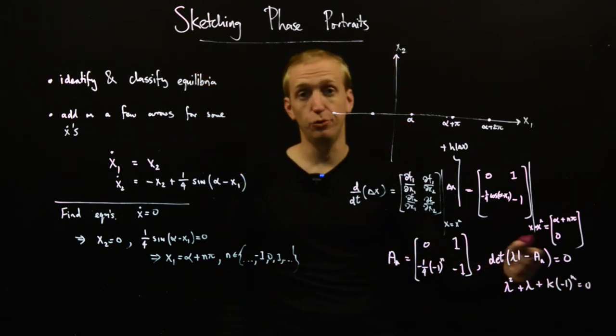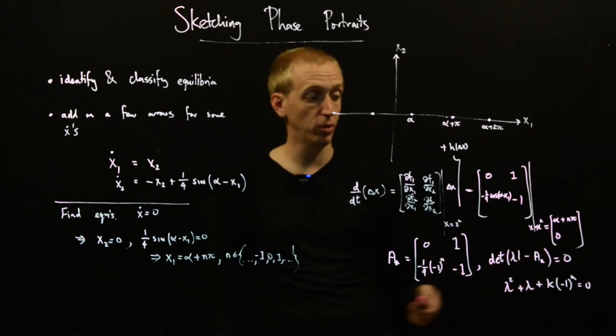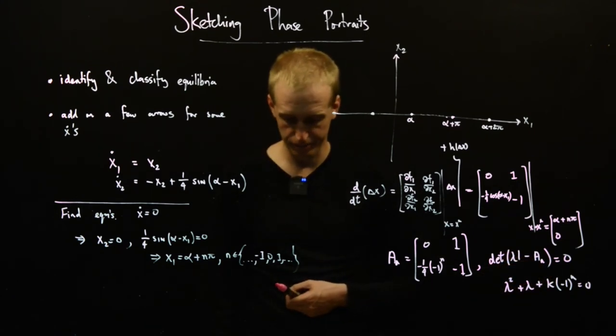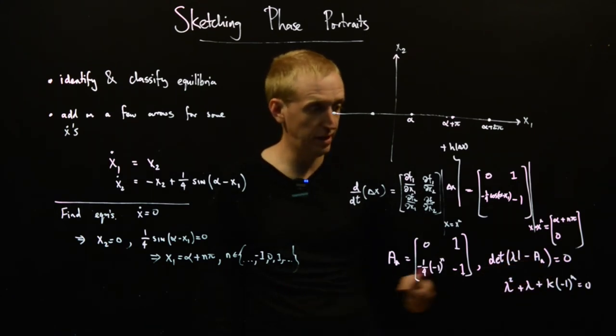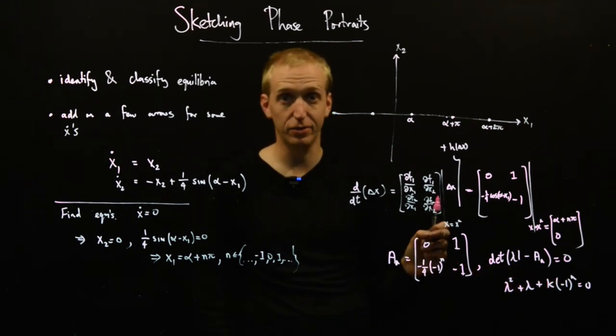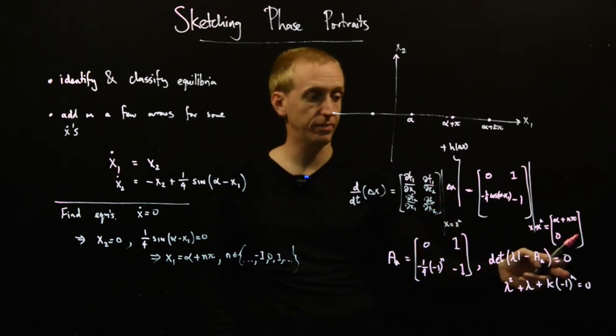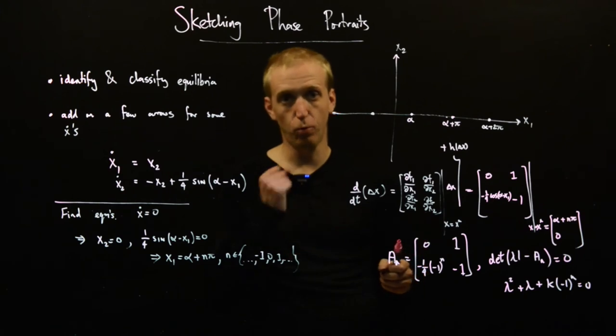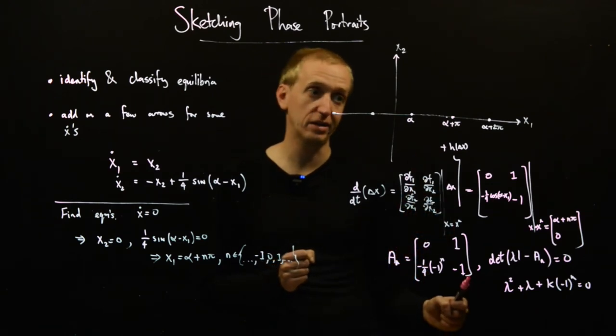And if you go away and you apply the quadratic formula, what you will find is that for n equal to zero, you get a pair of eigenvalues in the same location. Whereas if n is one, you get one positive eigenvalue and one negative eigenvalue.